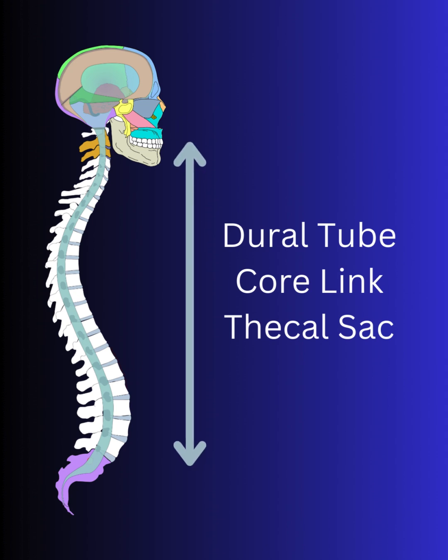As the membranes exit the cranium, they form a tube that surrounds the spinal cord. This structure is called the dural tube, core link, or thecal sac. They attach firmly to the second and third vertebra and the second segment of the sacrum and to the coccyx.